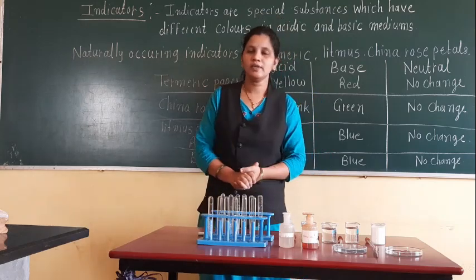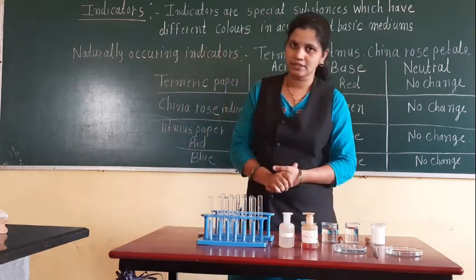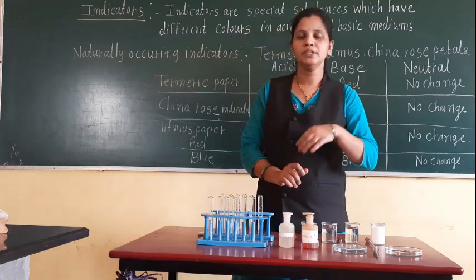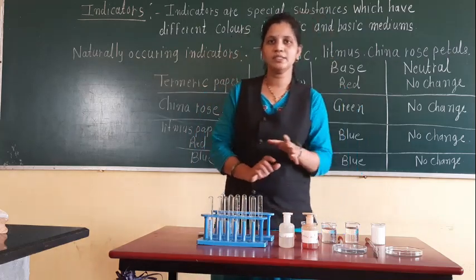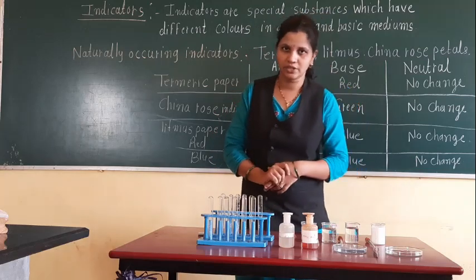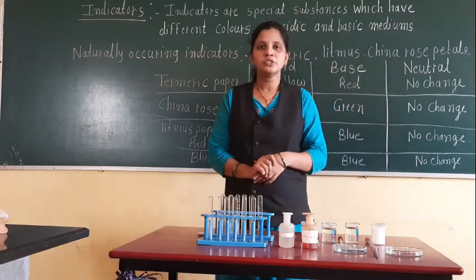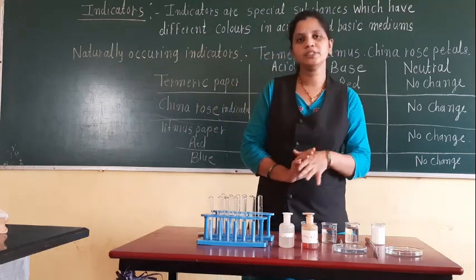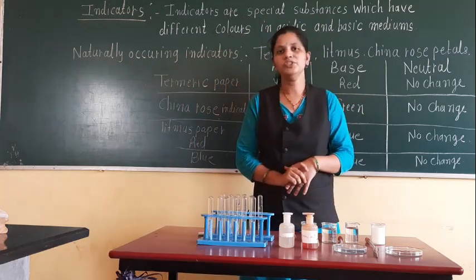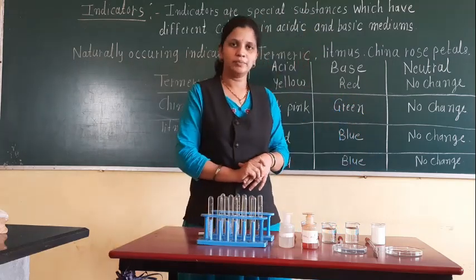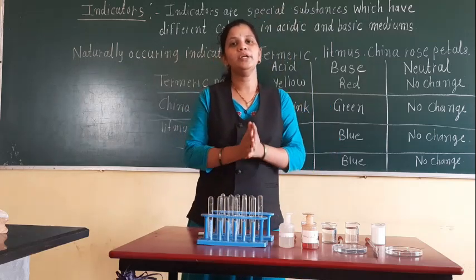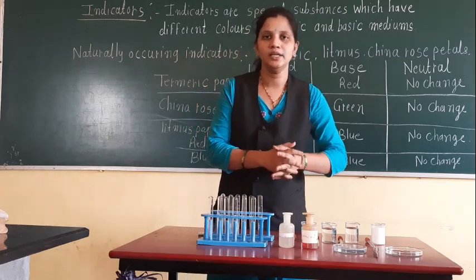Yesterday we discussed about bases and how to identify them, and some examples also. In acids, mostly H+ ions are present, and in bases, OH- ions are present. Now we will see the next point, that is indicators.